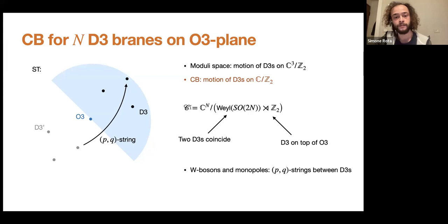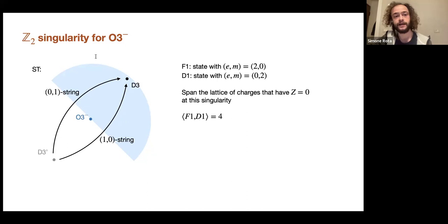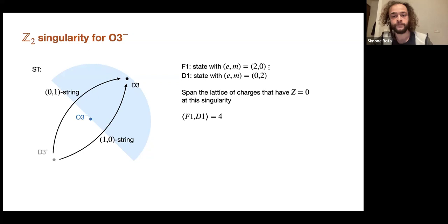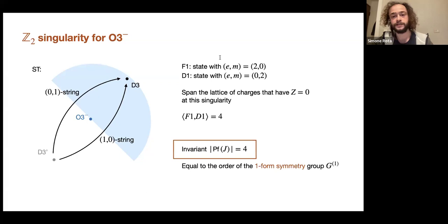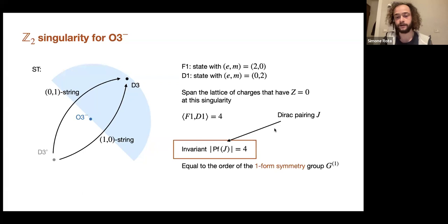We look at the Z2 singularity, taking O3-minus as an example. You can have any (p,q)-string stretched between the D3-brane and its image, and compute the electric and magnetic charges. A fundamental string has charge (2,0) and a D1-string has charge (0,2), and all other (p,q)-string charges are generated by integer combinations. You compute the Dirac pairing, and look at the invariant — the absolute value of the Dirac pairing J — which in this case equals 4. This invariant corresponds to the order of the one-form symmetry group.